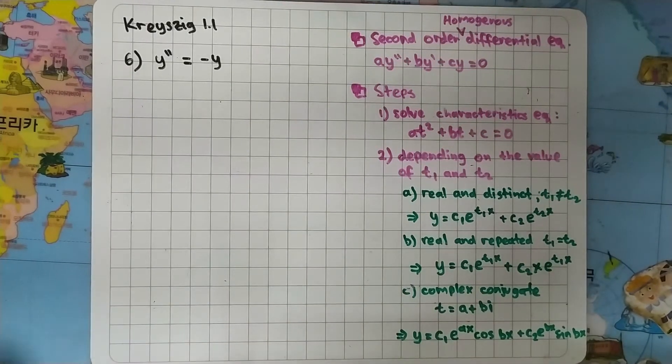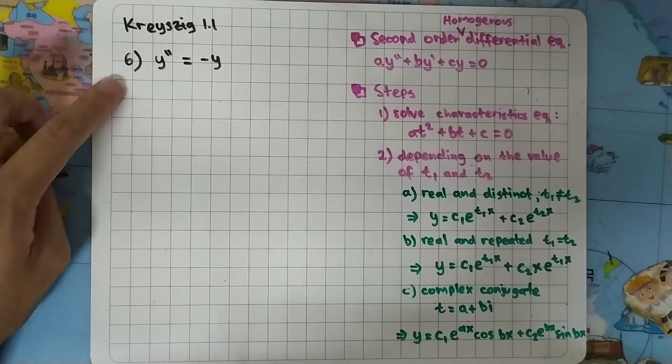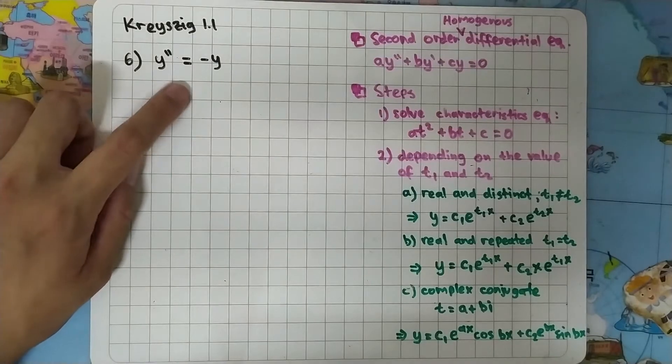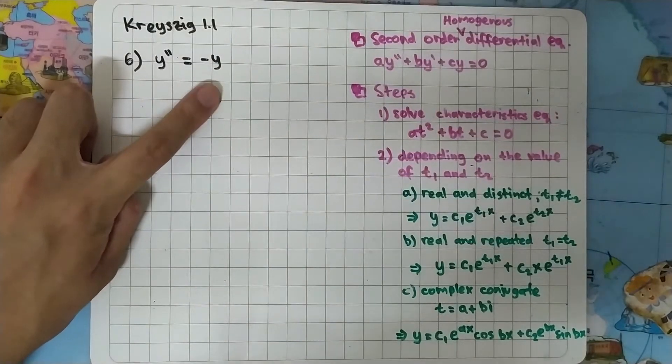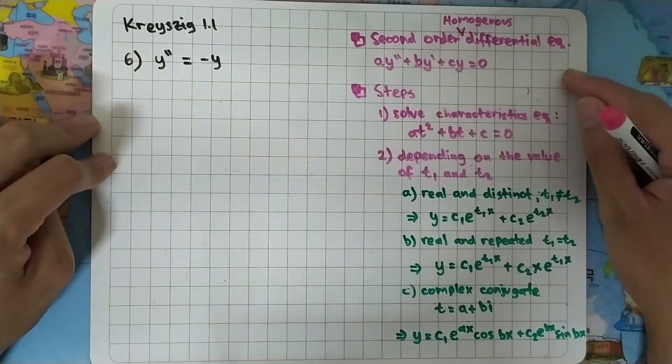We are going to solve problem 1.1 from Krasik and will answer question number six. The question is y double prime equals minus y. This is actually a second order homogeneous differential equation.